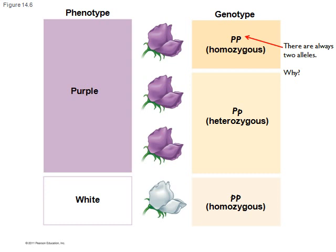Big P, little p is heterozygous, because you have two different alleles. Note that both the big P, big P genotype and the big P, little p genotype produce purple flowers. So different genotypes can give rise to the same phenotype.